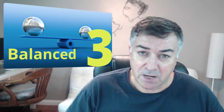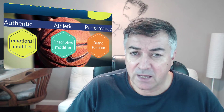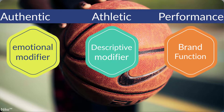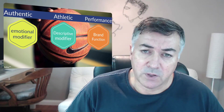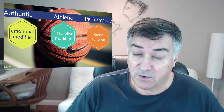We can now review some brand mantras created by big companies. The first example is from Nike. The brand mantra is 'authentic athletic performance.' The emotional modifier is 'authentic,' the descriptive modifier is 'athletic,' and the brand function is 'performance.' Nike makes and sells sport outfits and shoes, but they want to position themselves in a specific domain of sport. The tagline is 'just do it,' and remember the brand mantra is mostly for internal purpose.